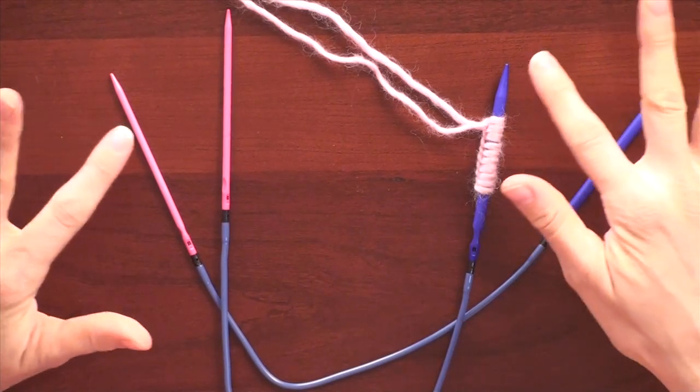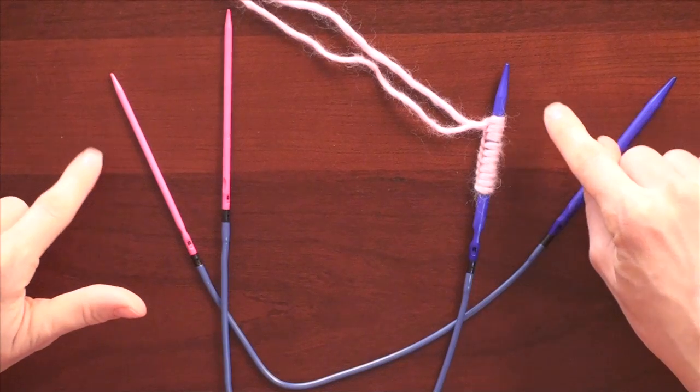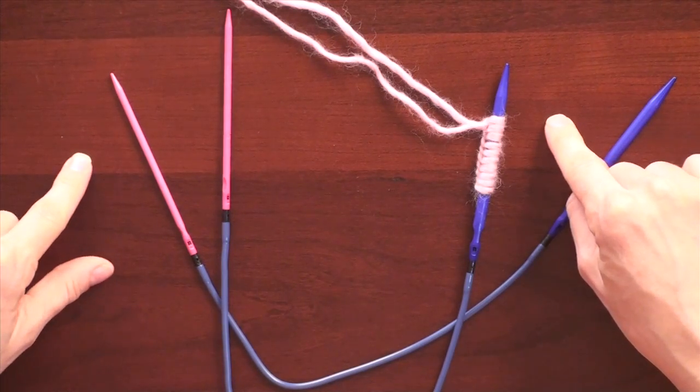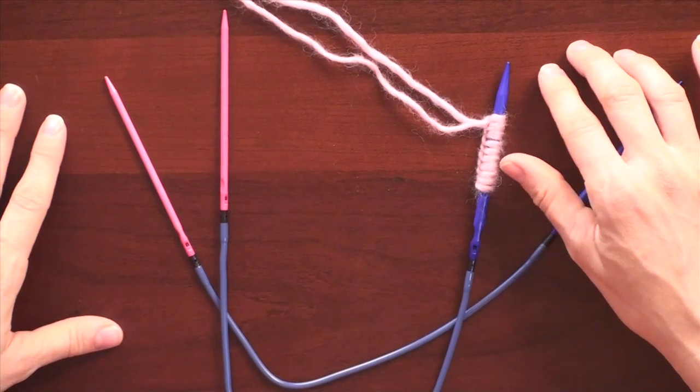I'm going to show you how to do small diameter circular knitting using two circular needles. You can use fixed circulars as that's what we have, just two circulars of the same size.